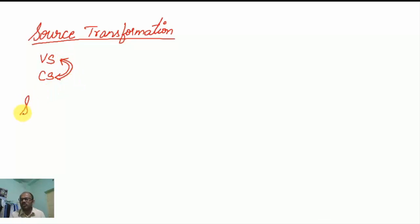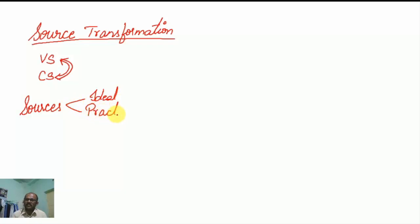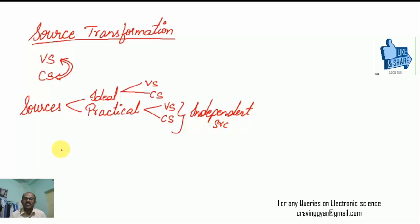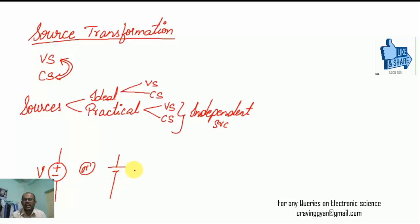Sources can be classified into ideal sources as well as non-ideal sources, also called practical sources. We have voltage sources and current sources under both ideal and practical scenarios. Voltage sources and current sources are independent sources. Some are dependent sources, such as voltage-controlled voltage source, current-controlled current source, current-controlled voltage source, and so on.